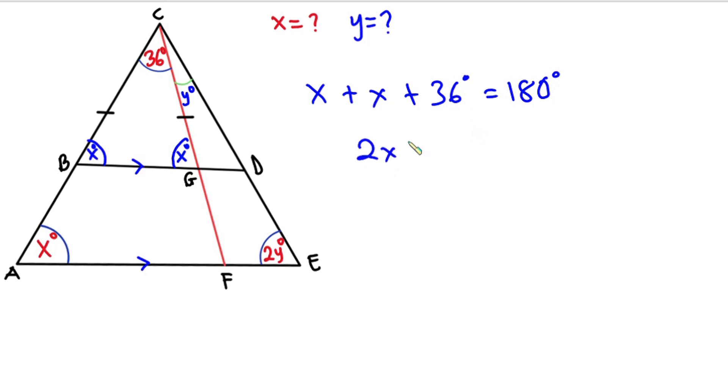So we have 2x is equal to 180 minus 36, which is 144. Now dividing each side by 2, we have x to be 144 divided by 2, which is 72 degrees.